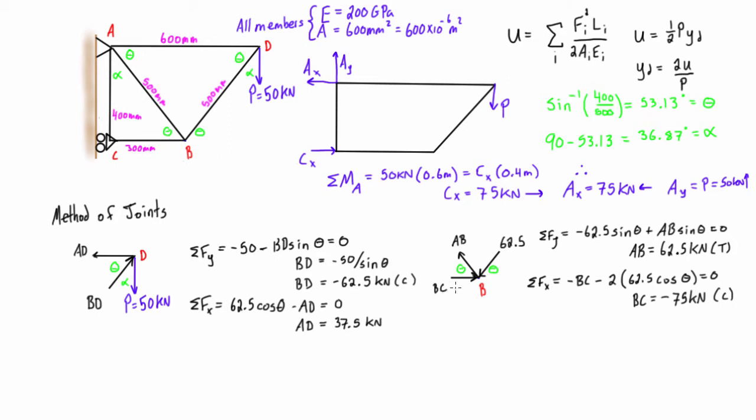If we want, we can check some things like BC here is in compression, so it'll be pressing against the wall here with 75 kilonewtons, and we did calculate CX here to be 75 kilonewtons pressing this way, so that checks out.